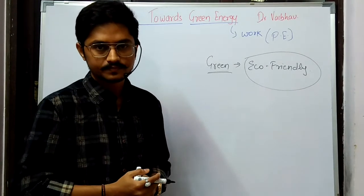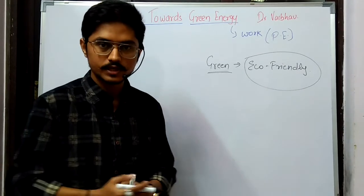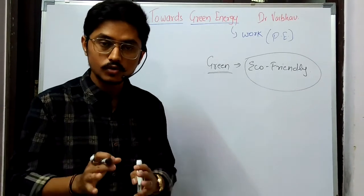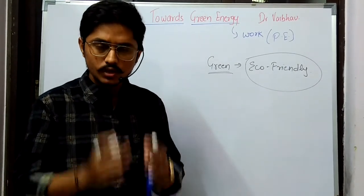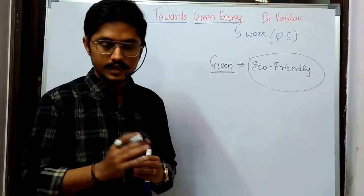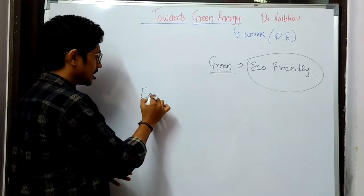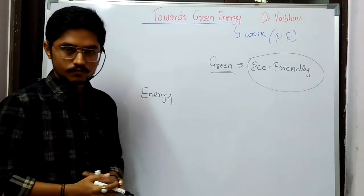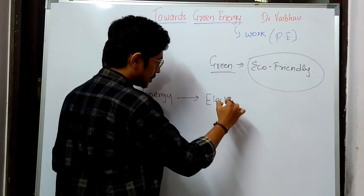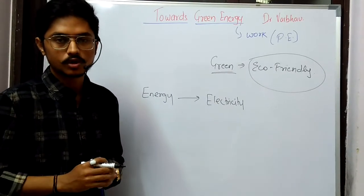Simple example — you all know solar car, which runs on solar energy. Solar chips, solar panels — you all have heard about this. Now what we are going to understand in this chapter is how a car runs on solar energy. Simply put, in this chapter we will take a source of energy and convert it into electricity. That is entirely what this chapter is all about.